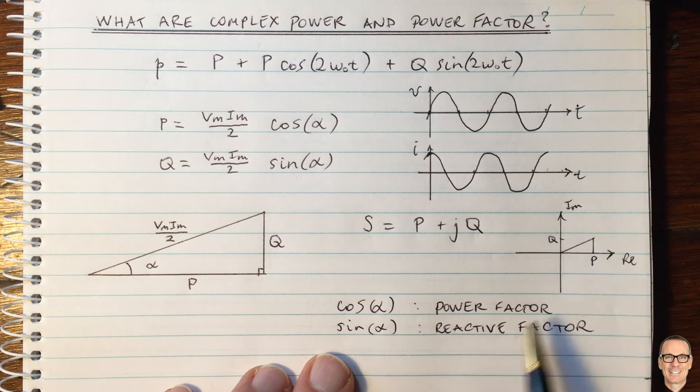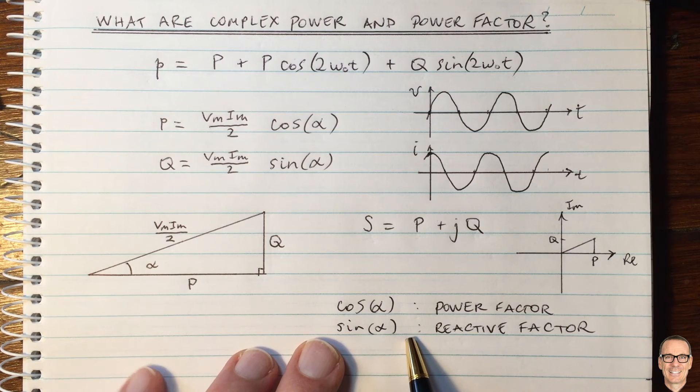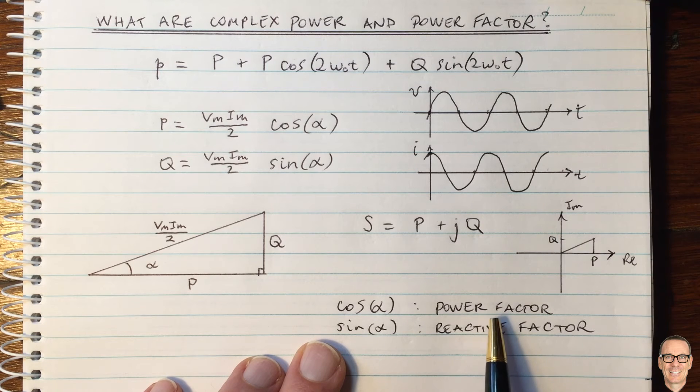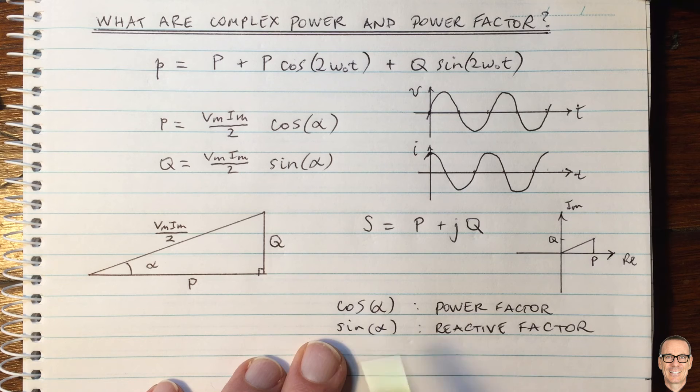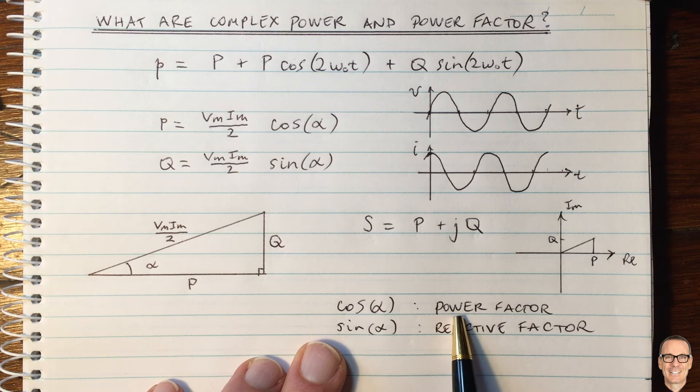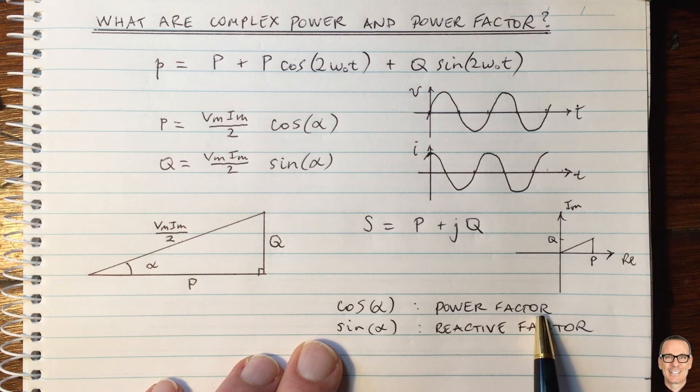So why do we define power factor and reactive factor? Well, it gives us insights into our circuit. For example, if we have inductors in the circuit, they have a positive value of Q and we call that a lagging power factor. If we have capacitors, they have a negative value of Q and we call this a leading power factor.